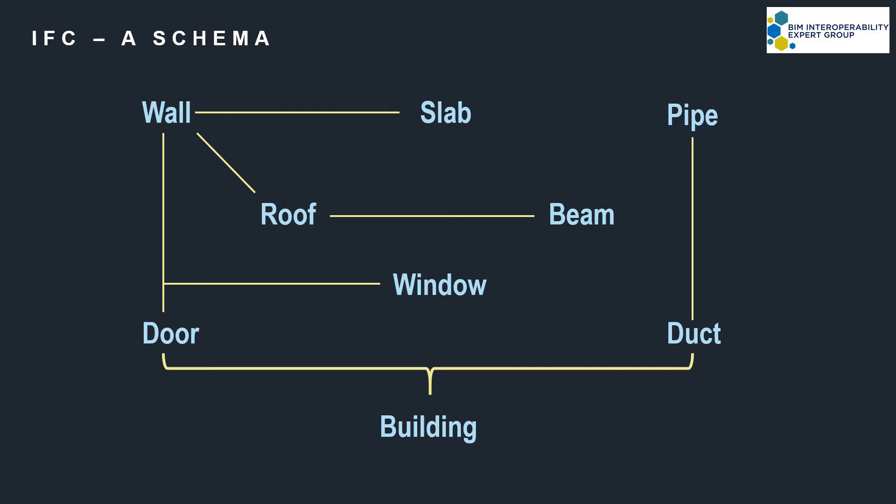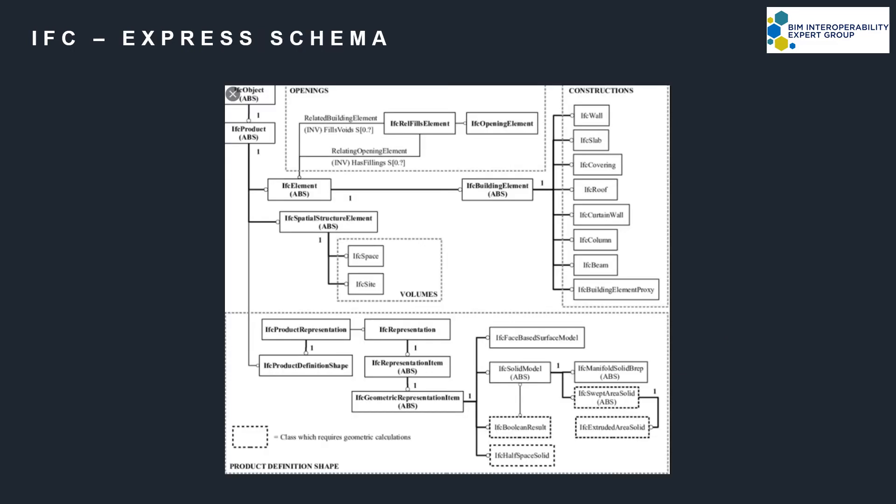For the data model, this language is called a schema, which can be represented graphically. IFC uses several schemas. Currently the principal one is called the Express schema, represented by ISO 10303-11. And using Express, this is what a tiny part of the IFC data model looks like — the entities, now shown in boxes, are connected via lines which create the relationships. To most this just looks like gobbledygook, and that's fine because it's a computer that needs to read it, not people.